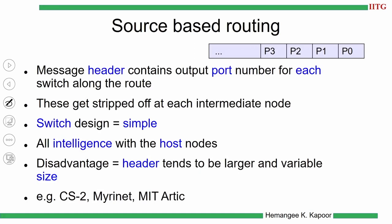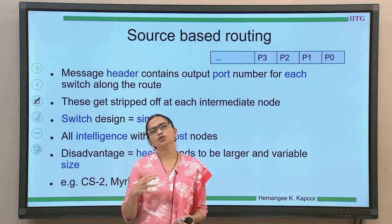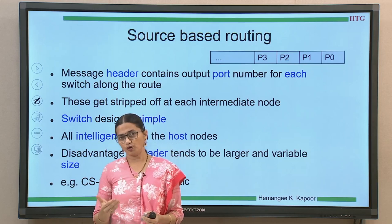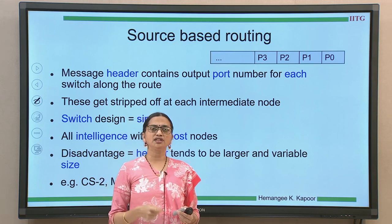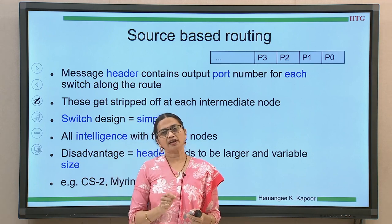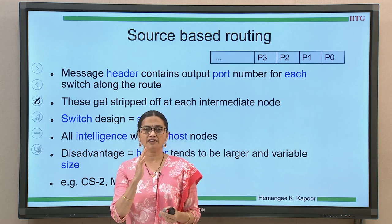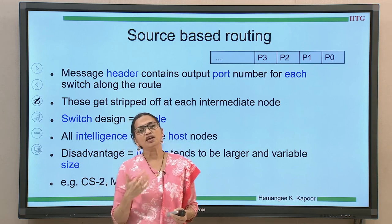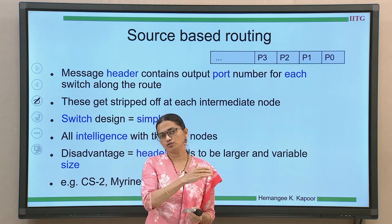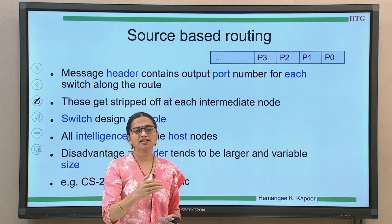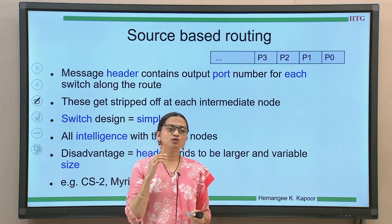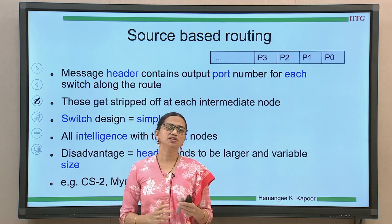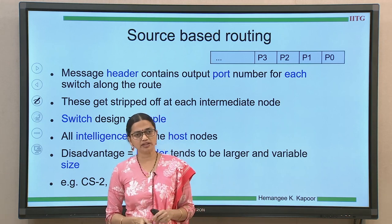The second routing algorithm is source-based routing. As the word says, when you start from your source, you already know the path to follow. Like going from home to college with a notebook of which streets to take and where to turn — you have the complete steps with you, discarding each step as you consume it. That is called source-based routing.